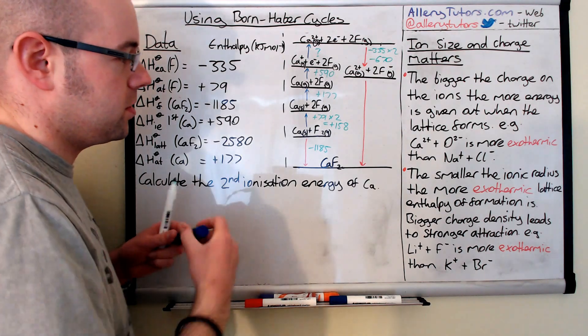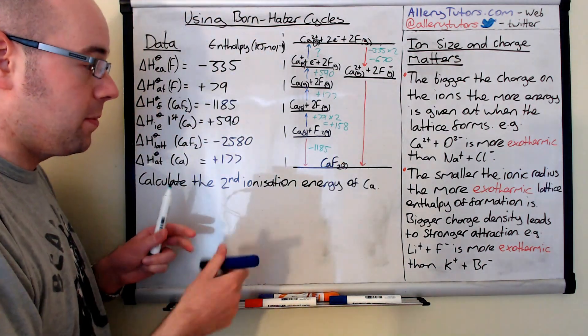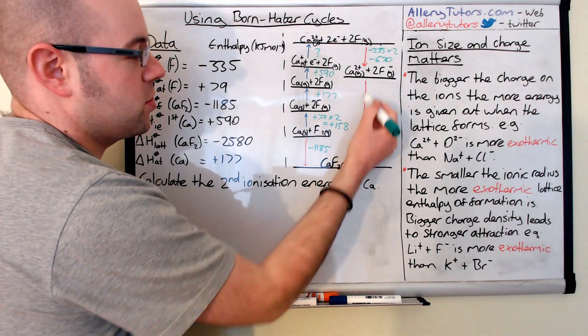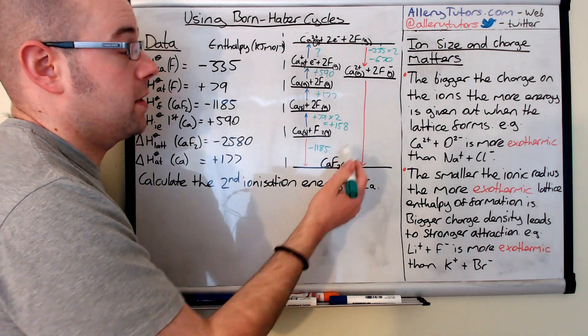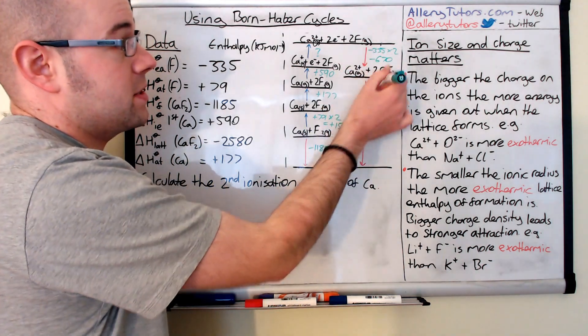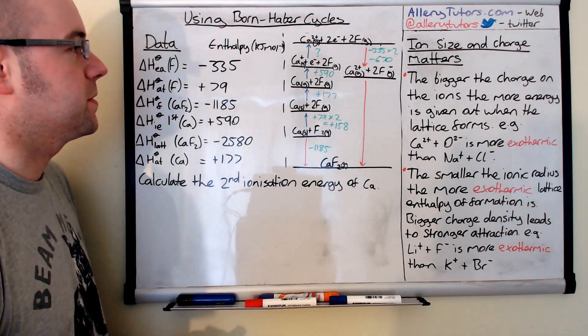So I'll put an S there. From elements in their standard states. Whereas a lattice enthalpy of formation is the formation of your calcium, of your solid ionic compound from ions in the gaseous state. So this is different from enthalpy of formation. You've got to make sure that you know the difference between that as well.